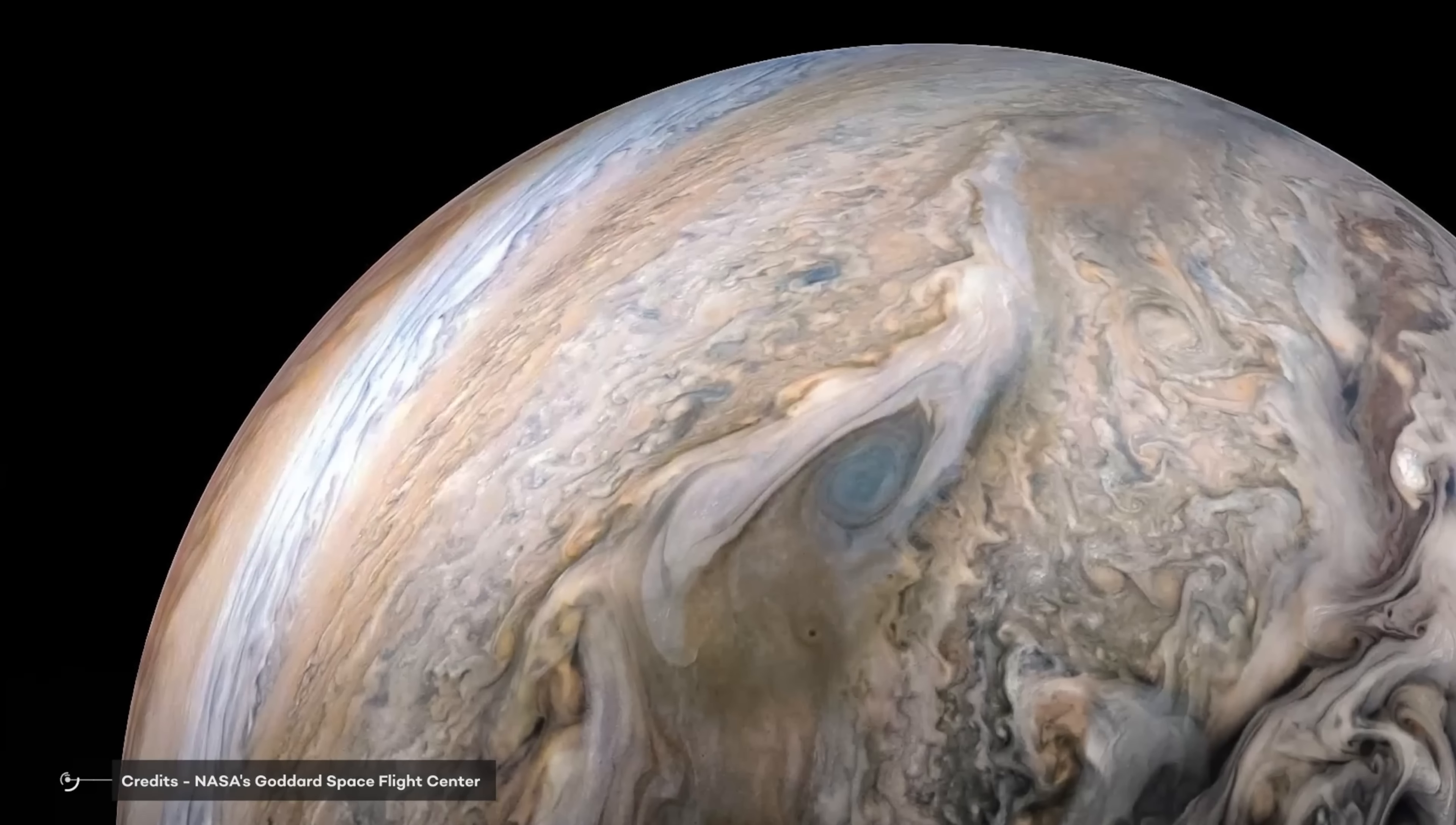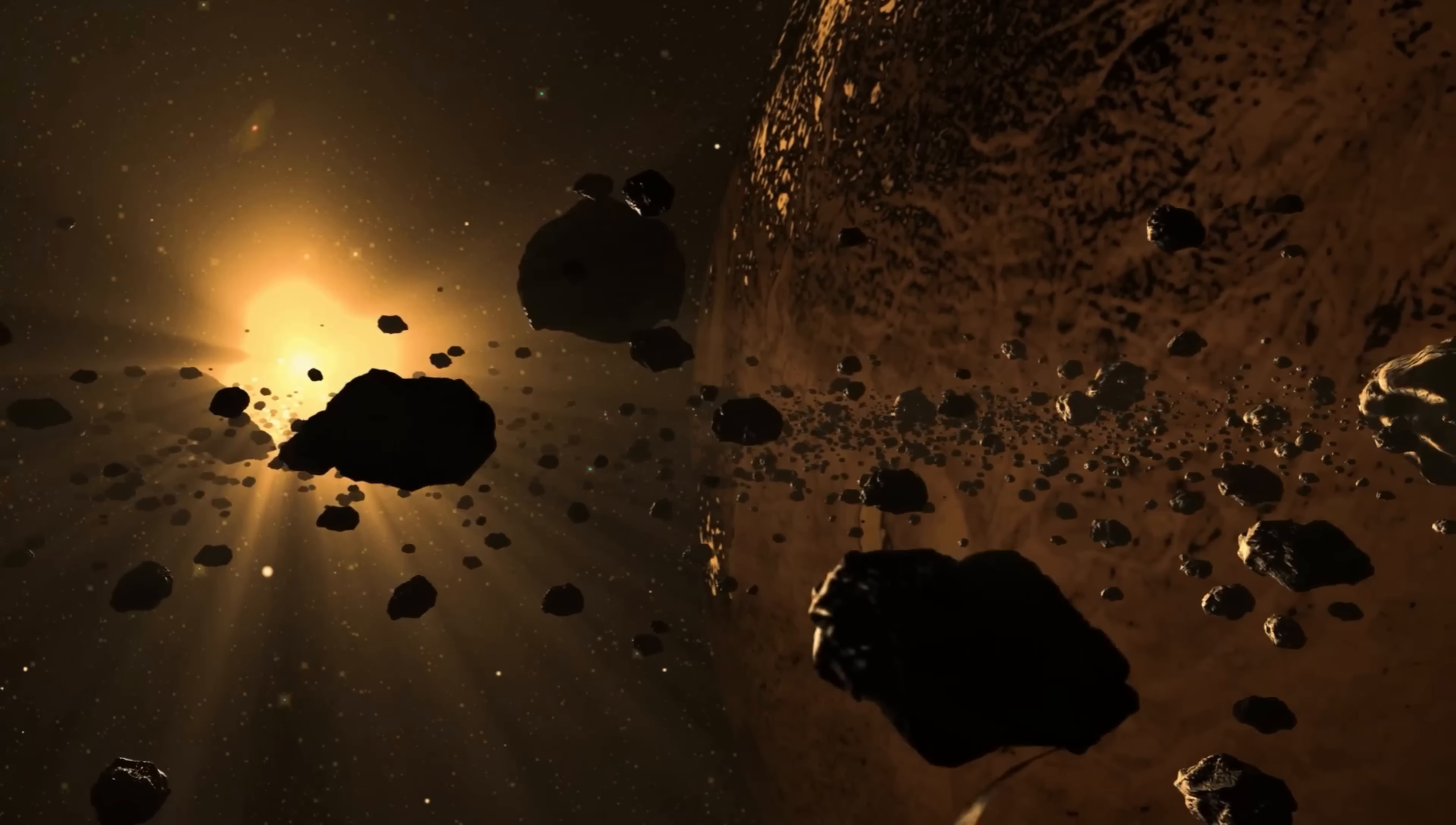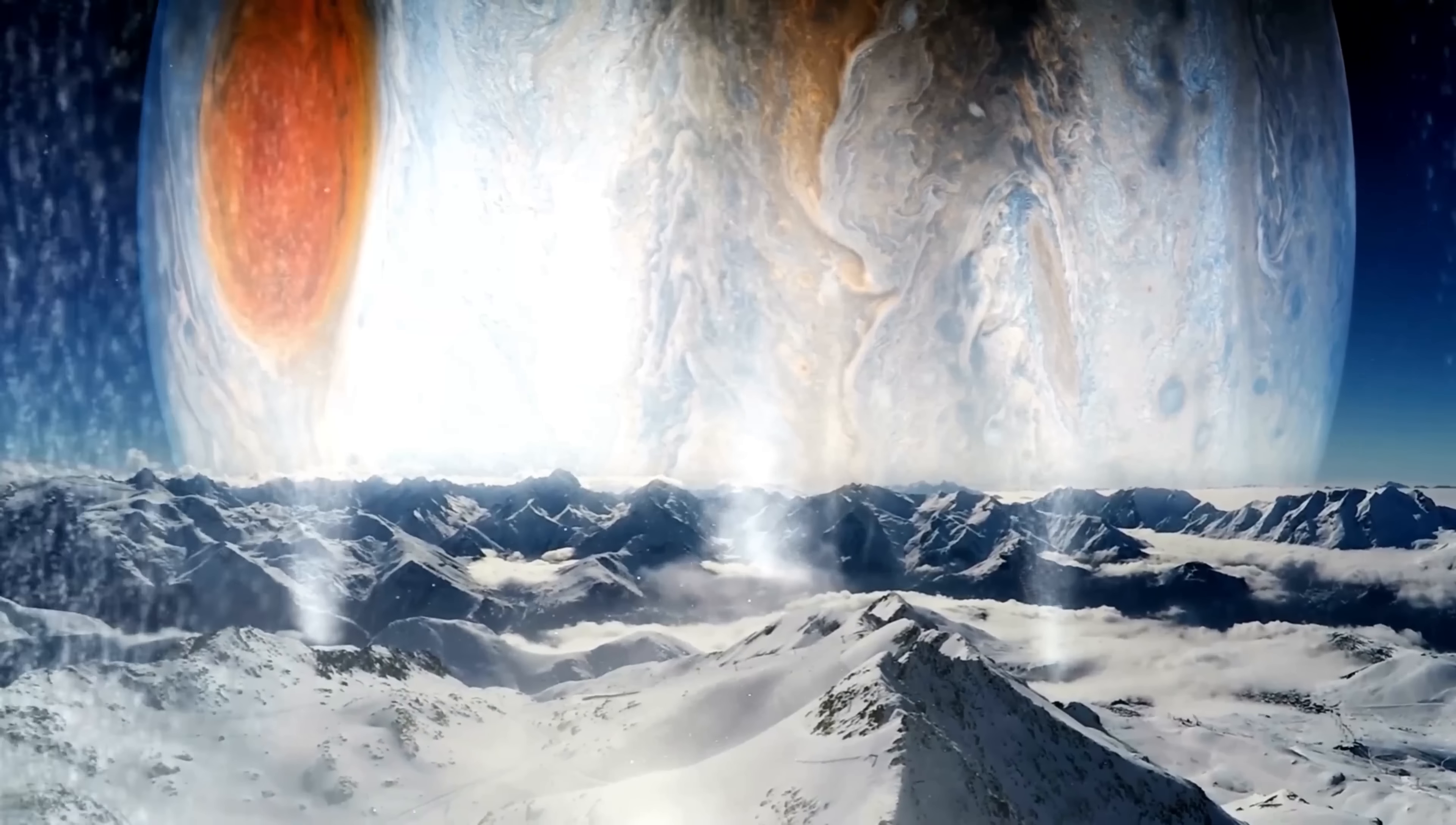As we go with Webb's observation, we will test other objects traveling at different speeds to ensure that we can investigate things moving across the solar system with Webb. Webb's capacity to view close targets will enable it to investigate anything from frozen objects in the Kuiper belt to possibly habitable moons surrounding our solar system's gas giant planets.